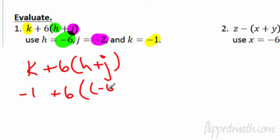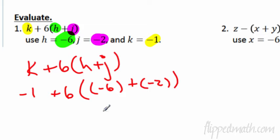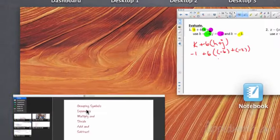I'm substituting in for H, which is negative 6 by the way. Why do I have to use parentheses all the time? I'm substituting in for J — why am I using parentheses there? The answer is you should always use parentheses when you're subbing in a negative.